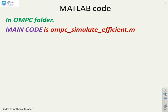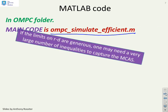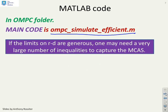The provided code, ompc_simulate_efficient, uses the efficient admissible set algorithm. A key point: if the limits you put in for r minus d are generous, you might need a large number of inequalities to capture the MCAS. If the MCAS boundary is tight and your steady state is essentially on the boundary, the iteration may only get there asymptotically, requiring many inequalities. That is why we recommend always choosing your steady states to be strictly inside the boundary, which greatly reduces the number of iterations needed.